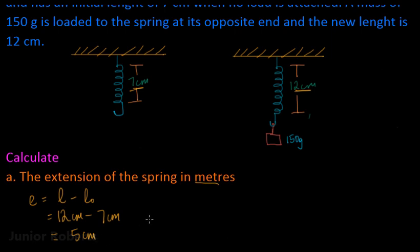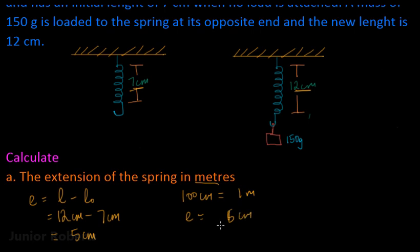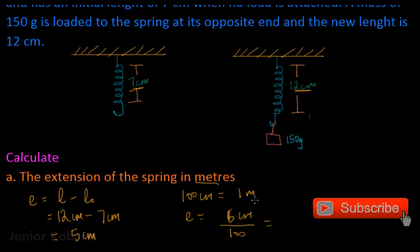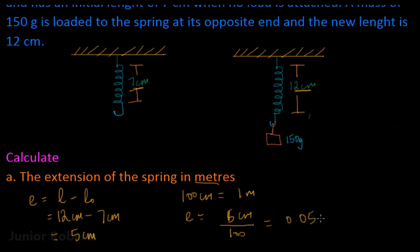However, the question asked for the extension in meters, so we need to convert our answer. We know that 100 centimeters is equal to one meter, so since we're going from a small unit to a large unit we divide by our conversion factor. Our extension is equal to five centimeters divided by 100, which equals 0.05 meters.